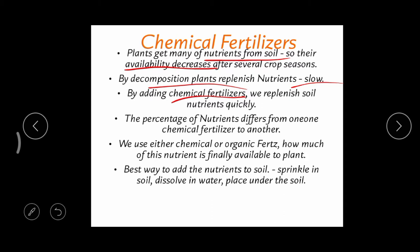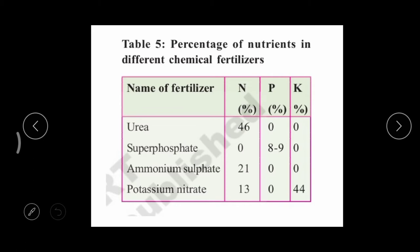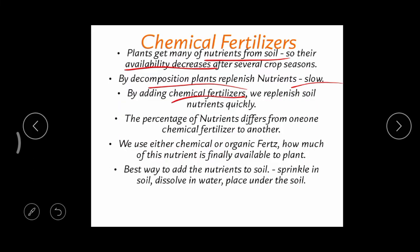The percentage of nutrients differs from one chemical fertilizer to another. In this table we can find different types of chemical fertilizers: urea, super phosphate, ammonium sulfate, potassium nitrate. If you observe the NPK ratio, all these fertilizers are not equal. In urea we find only nitrogen at 46%, while phosphorus and potassium are absent. In super phosphate, only 8–9% phosphorus. Ammonium sulfate has nitrogen at 21%.